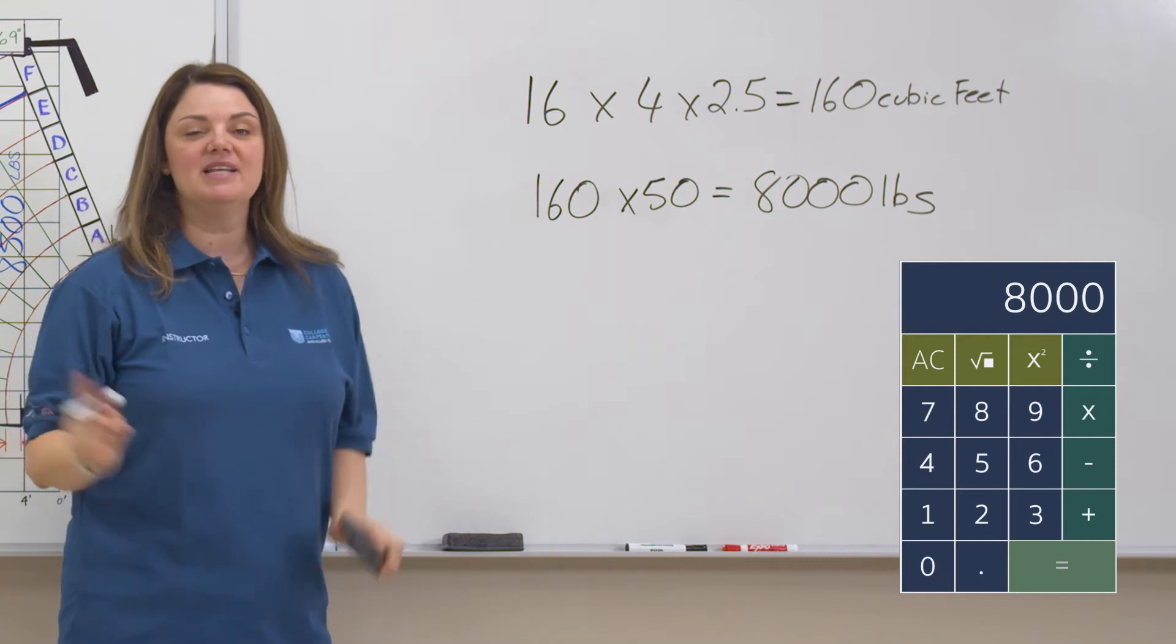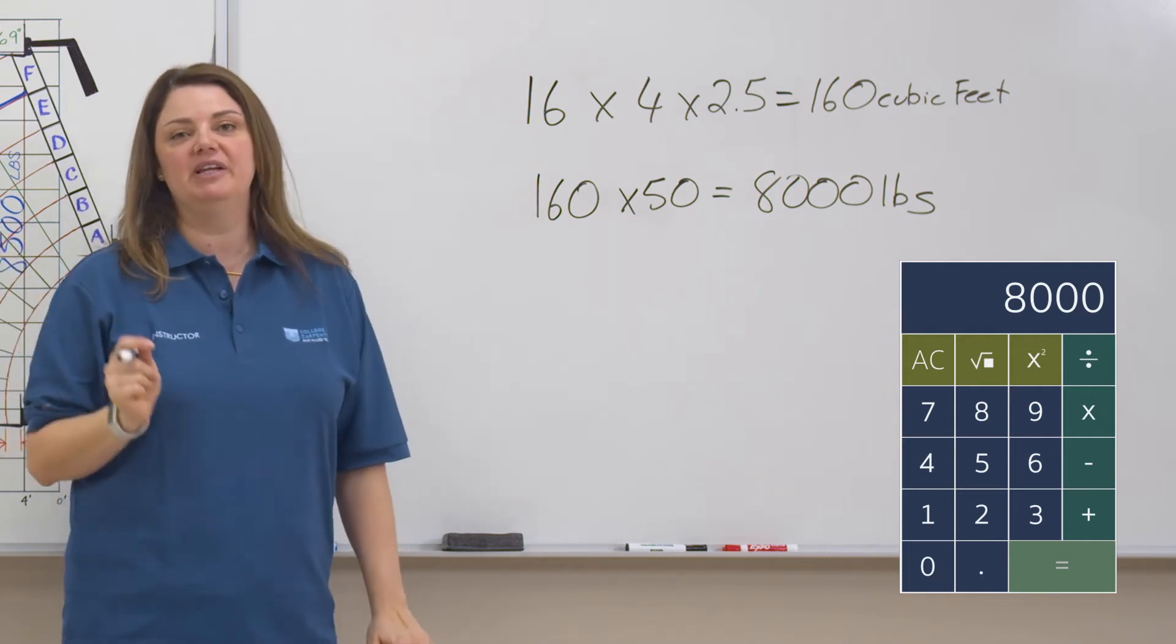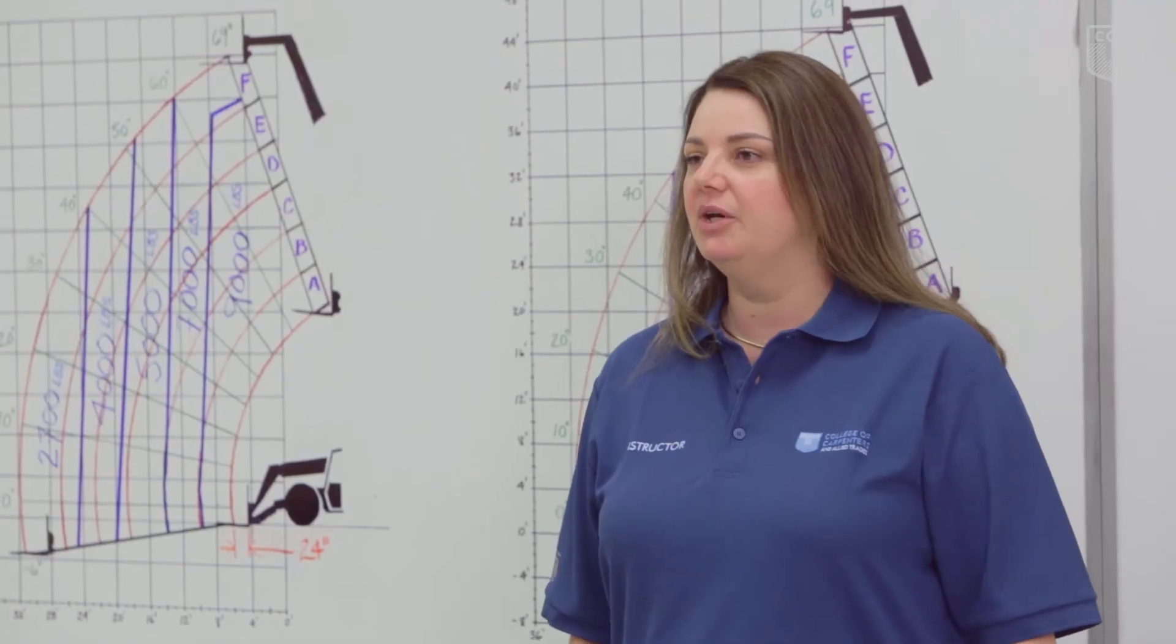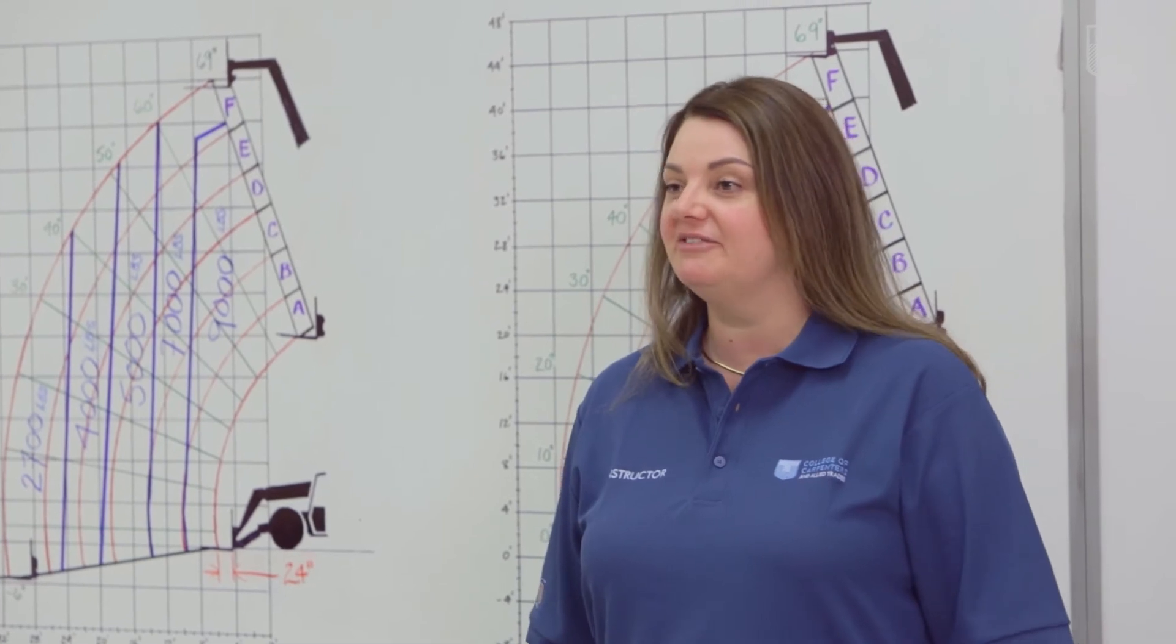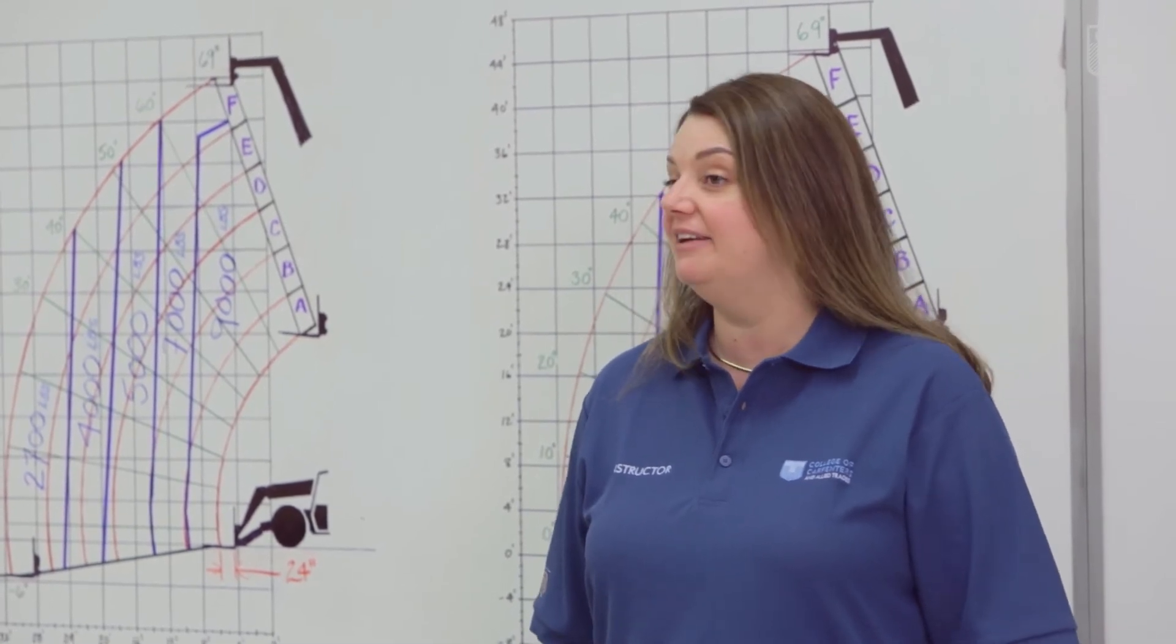We're going to take that 8,000 pounds, and we're going to look at our charts now to see if we can lift this. Now that we know the weight of the load, we can determine if the lift is within the capacity of the machine, and if this is safe.